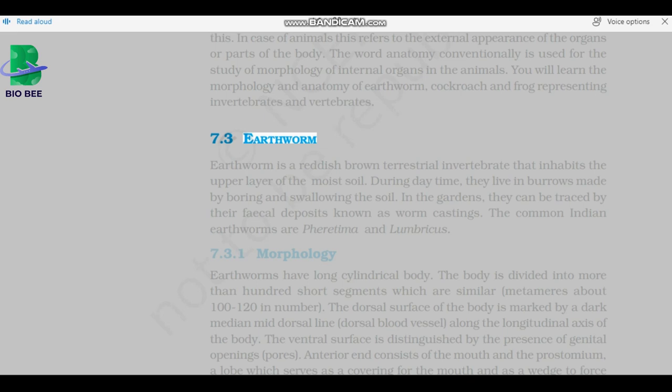Earthworm is a reddish-brown terrestrial invertebrate that inhabits the upper layer of the moist soil. During daytime, they live in burrows made by boring and swallowing the soil. In the gardens, they can be traced by their faecal deposits known as worm castings. The common Indian earthworms are Pheretima and Lumbricus.